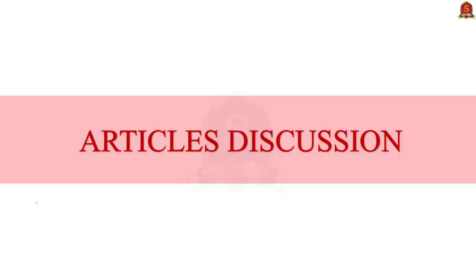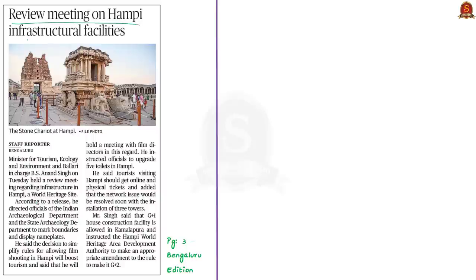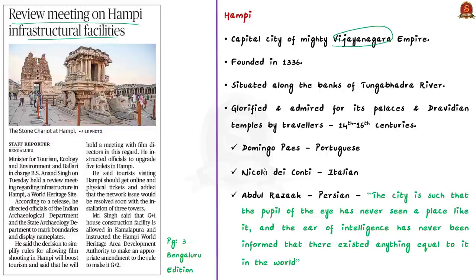Now, the news article mentions that a review meeting was held regarding infrastructure in the group of monuments at Hampi. As you know, Hampi was the capital city of the mighty Vijayanagara Empire — the last capital of the last great Hindu kingdom. The city was founded in 1336 and is situated along the banks of the Tungabhadra River. This discussion is very important for your preliminary and mains examination, and the illustrations provided can serve as value addition in mains. The city was glorified in its past for its palaces and Dravidian temples.